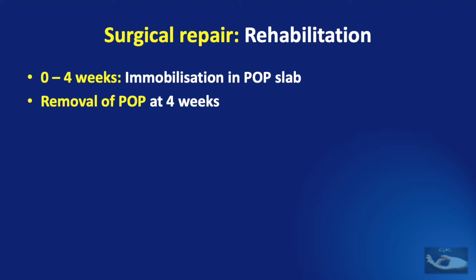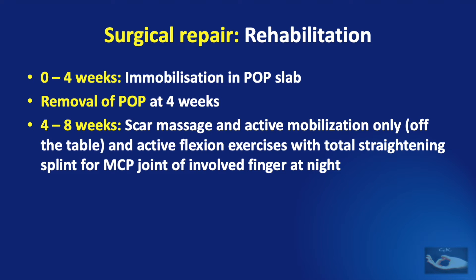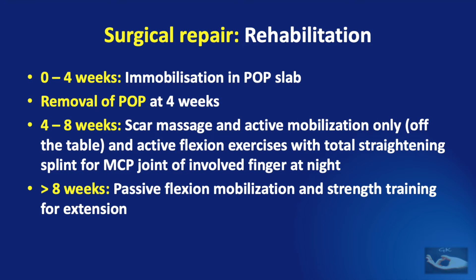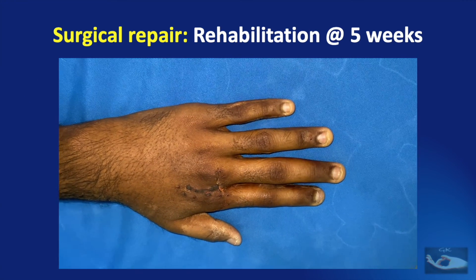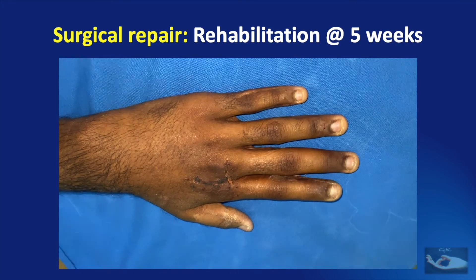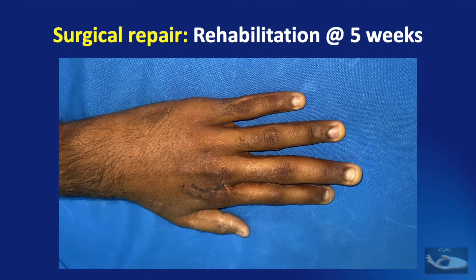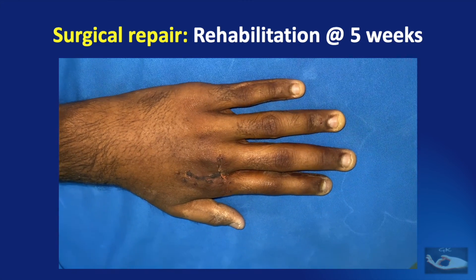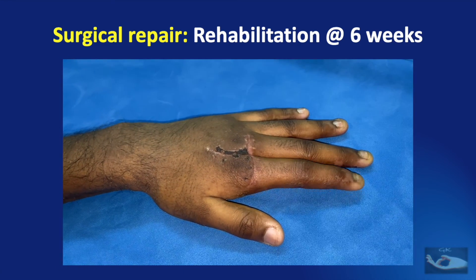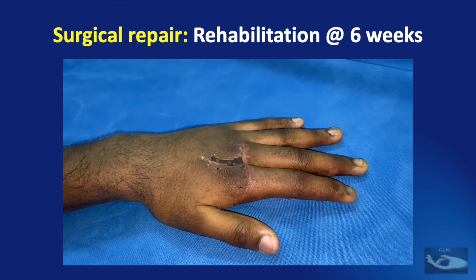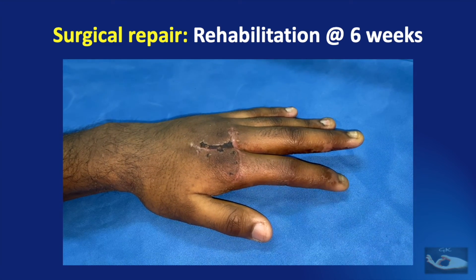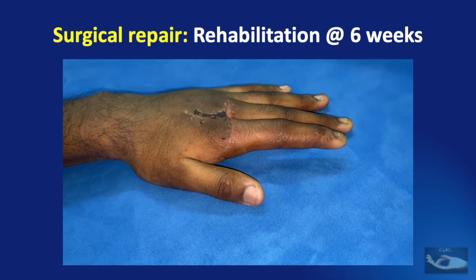The removal of the POP slab is done at the end of 4 weeks. Between 4 and 8 weeks, certain important instructions are given: scar massage and active mobilization only off the table, and active flexion exercises with a total straightening splint for the metacarpophalangeal joint of the involved finger to be worn at night. After 8 weeks, passive flexion mobilization and strength training for extension can be started. This is the condition of the patient at about 5 weeks after suturing — the POP has been removed 1 week back, and there is just a flicker of movement lifting the index and middle fingers off the table.